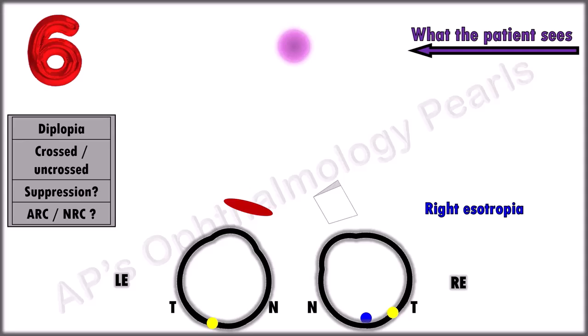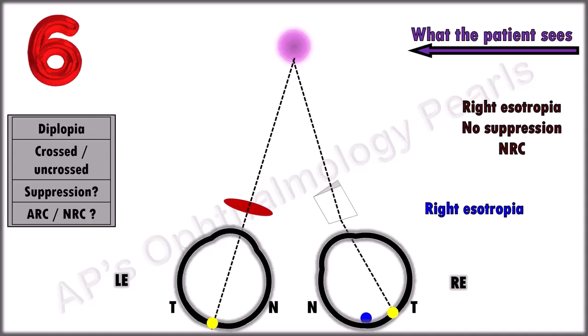Diplopia is absent. Suppression? No. There is a fusion response. The type of retinal correspondence? This is normal retinal correspondence. This is a right esotropia with normal retinal correspondence and absence of suppression. The image now falls on the fovea. This is how a neutralizing prism prevents diplopia in the absence of suppression.